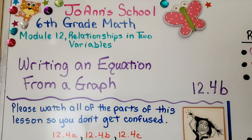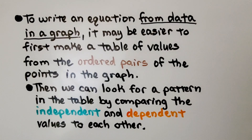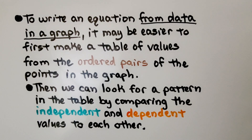Lesson 12.4b: Writing an Equation from a Graph. To write an equation from data in a graph, it may be easier to first make a table of values from the ordered pairs of the points in the graph. Then we can look for a pattern in the table by comparing the independent and dependent values to each other.